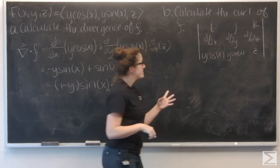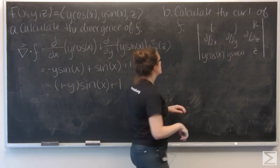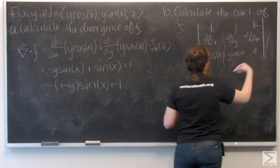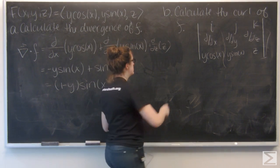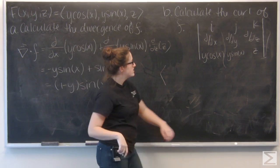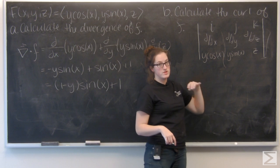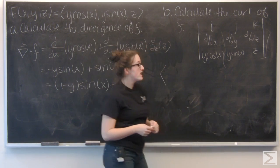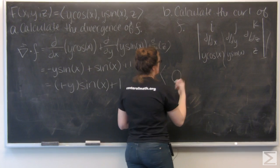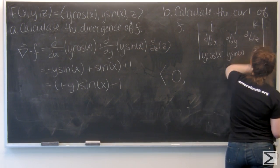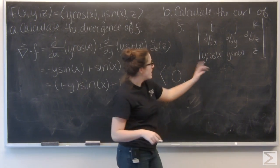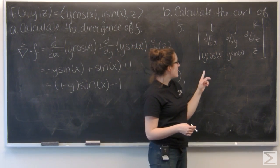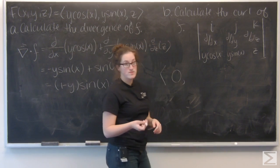Let's go ahead and take these cross products using cofactor expansion. For the i component, I take the determinant of the 2 by 2 submatrix: the partial derivative of z with respect to y, which is 0, minus the partial derivative of y sine x with respect to z, which is also 0. For the j component, I have the partial derivative of z with respect to x, which is 0, minus the partial derivative of y cosine x with respect to z, which is again 0.